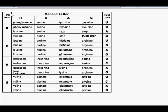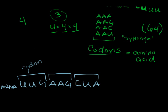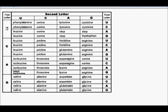To read the chart, look at the first letter down the left side. Let's look at our first codon, UUG. The first letter is U. The second letter is across the top — so UU — placing us in this box. The third letter is on the right side: G. So our first codon, UUG, codes for leucine.